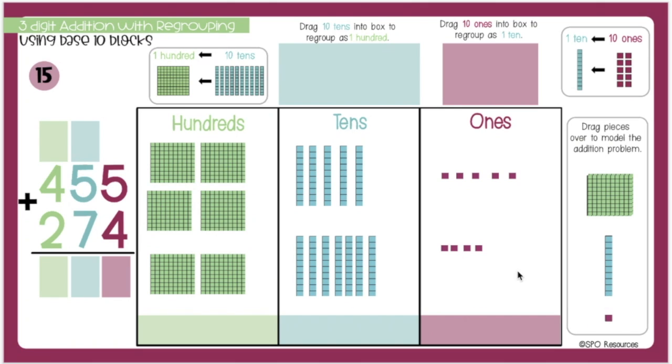Now, I will start in the ones place. Remember that if you have more than 10 ones in the ones place, you'll need to move 10 of them up to the box, and then add a 10 to the tens place. And if you have more than 10 tens in the tens place, you'll move 10 up to the box and exchange them for 1 hundred to add to the hundreds place.